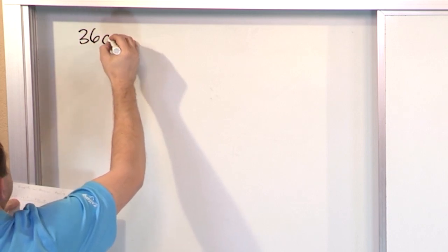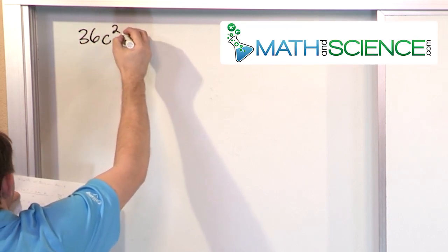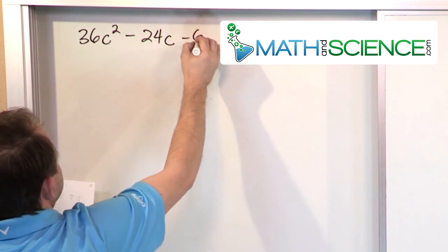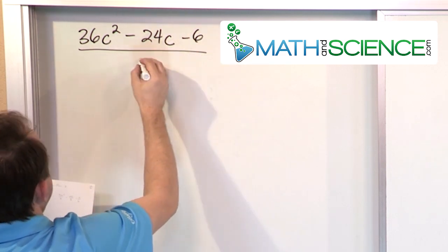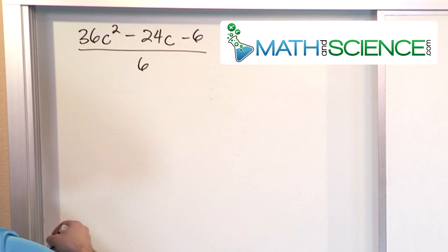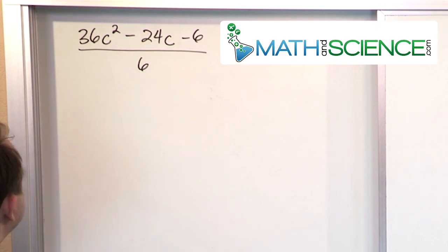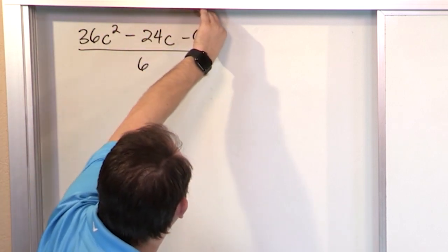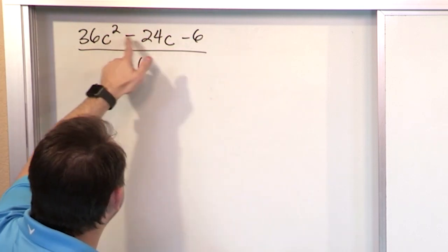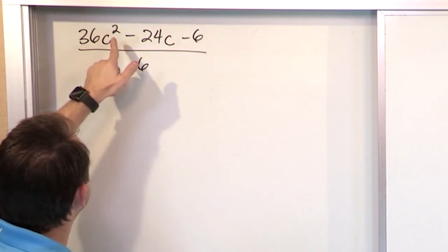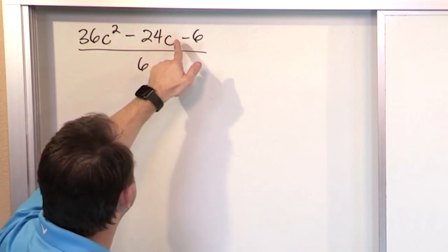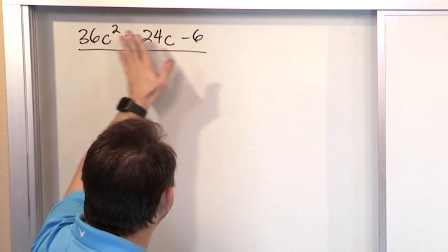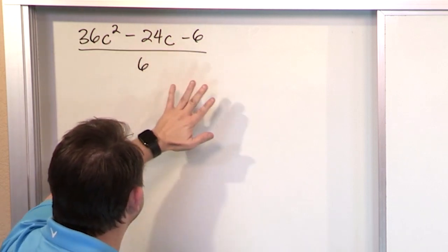We have 36c² minus 24c minus 6, and all of that is divided by 6. We want to simplify it. The first thing you do is look in the numerator — remember there are invisible parentheses around it — and try to simplify it. But you can't add them because this is a c² term, this is a c term, and this is a constant term. They have to match exactly, exponents and everything.